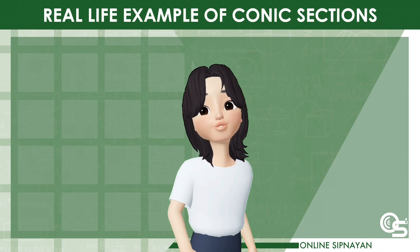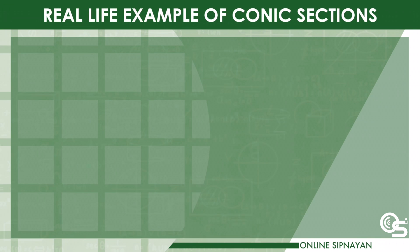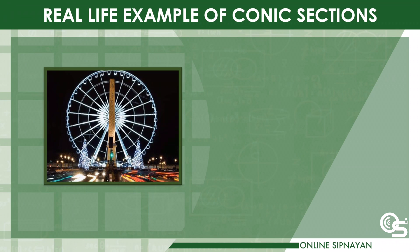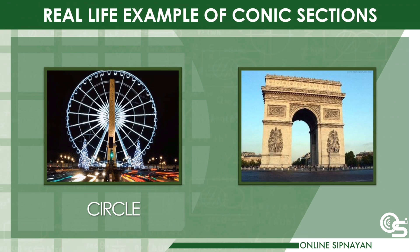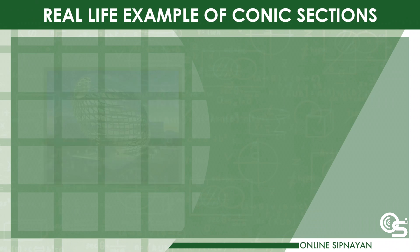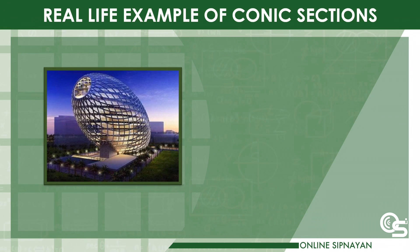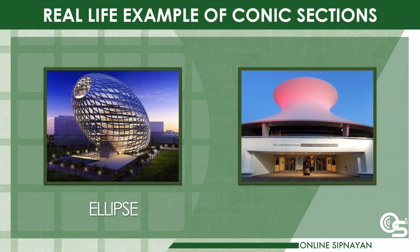These are some real-life examples of conic sections: circle, parabola, ellipse, and hyperbola.